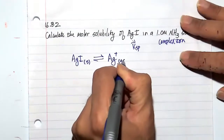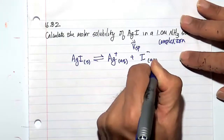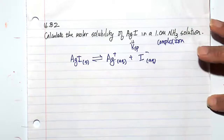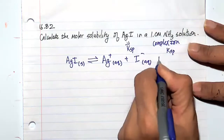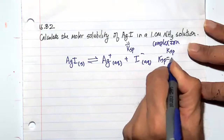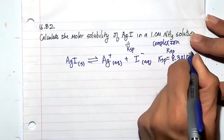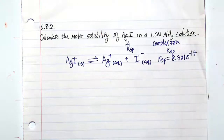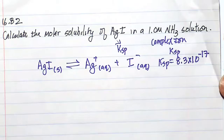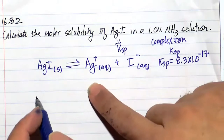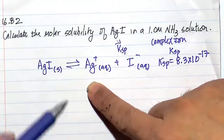First, we'll write our Ksp equation: silver iodide is in equilibrium with silver ion and iodide ion. That's Ksp for the sparingly soluble solid, silver iodide. This Ksp has a magnitude of 8.3 times 10 to the minus 17 — a very, very small number. So very little of it is going to go to the right-hand side of the equation, but some of it will. A very small amount will.